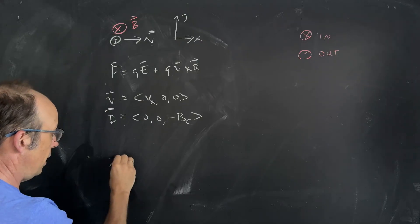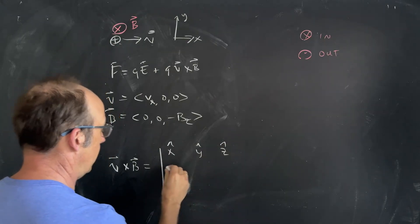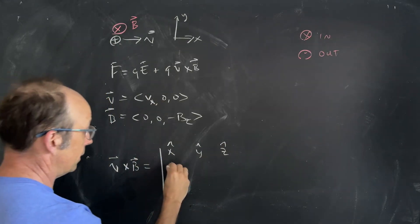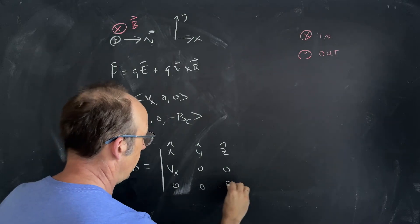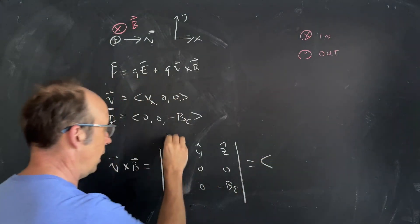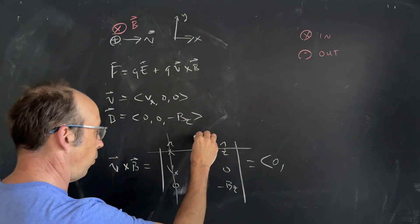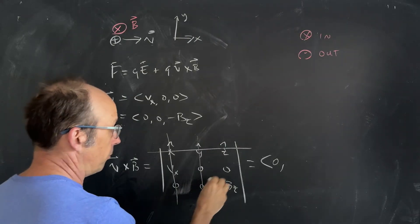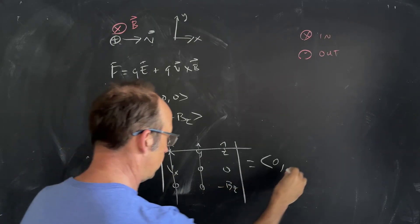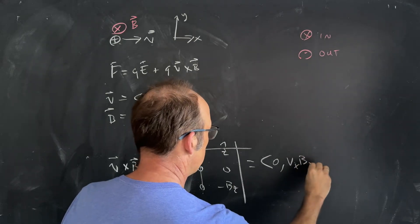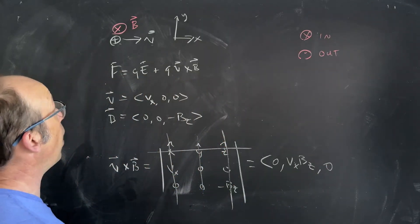V cross B is the determinant of the matrix with X hat, Y hat, Z hat. I'm going to put my components of V — that's (Vx, 0, 0) — then my components of B: (0, 0, -Bz). Taking this cross product, expanding about this row: for the X component I get 0·(-Bz) minus 0·0. For the Y direction, remember there's a negative one power, so I actually go backwards: I have 0·0 minus Vx·(-Bz), so I get Vx·Bz. Then in the Z direction I get 0. So this gives a force in the Y direction.